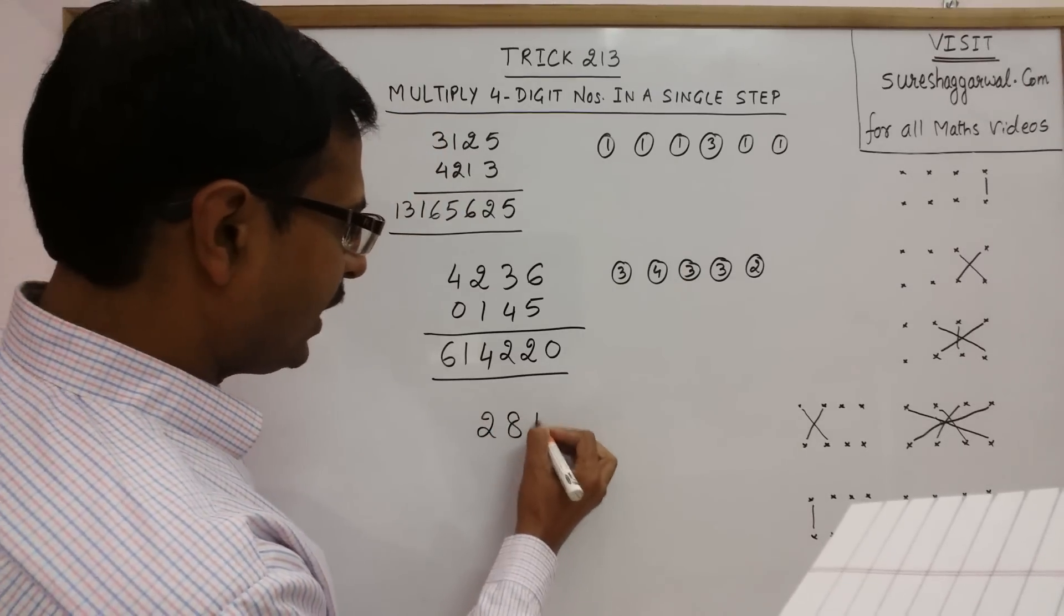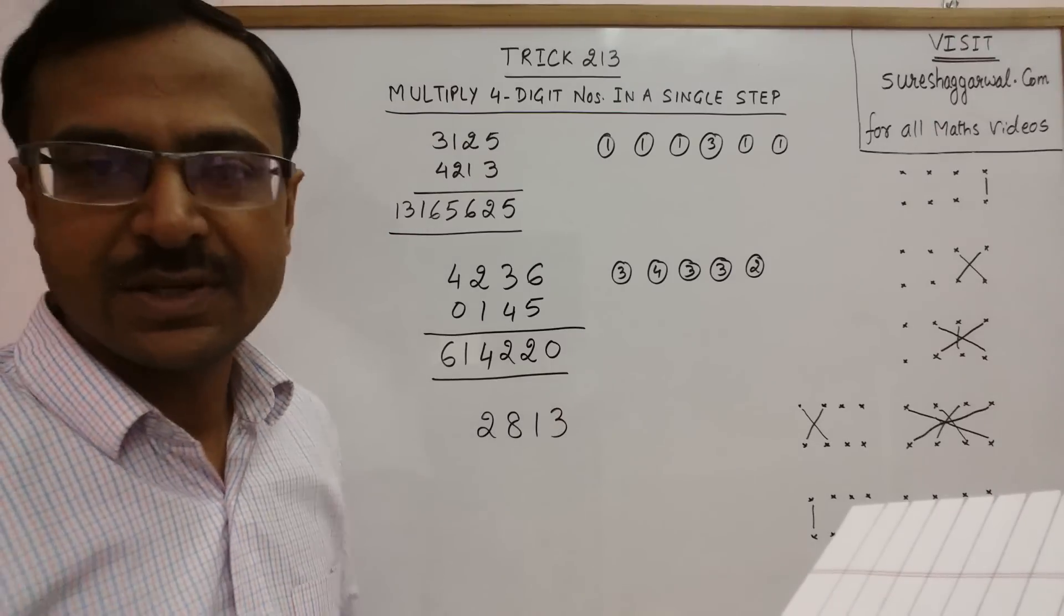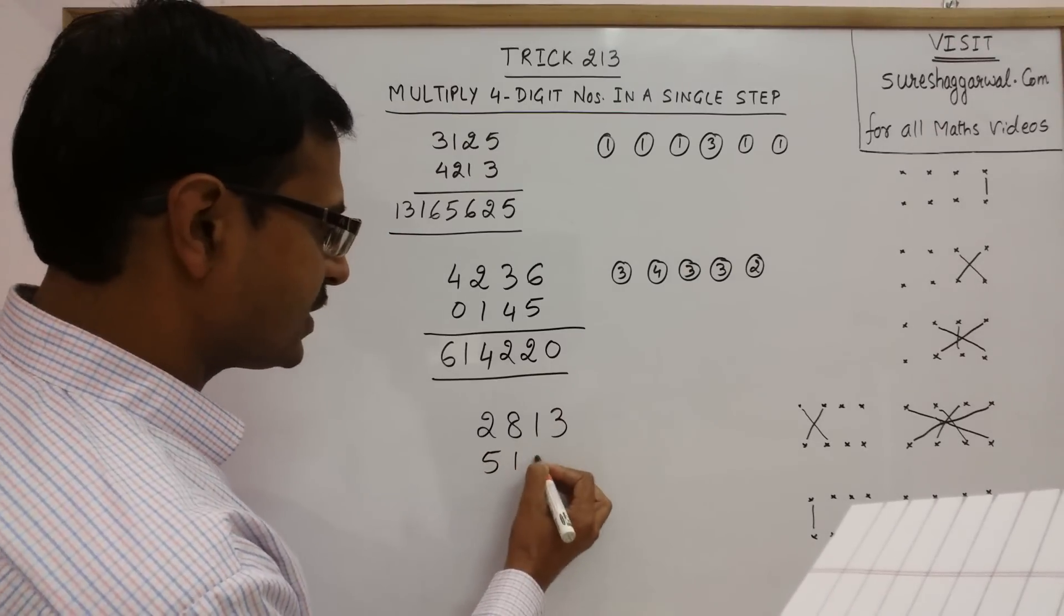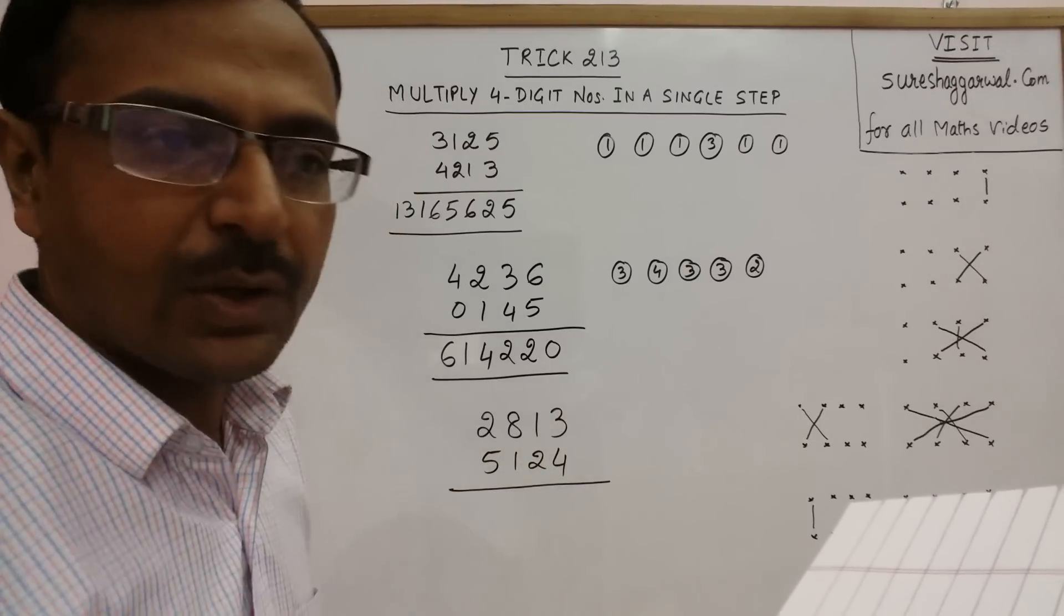One more example. Say 2,813, this is the first, and 5,124, suppose this is the second.